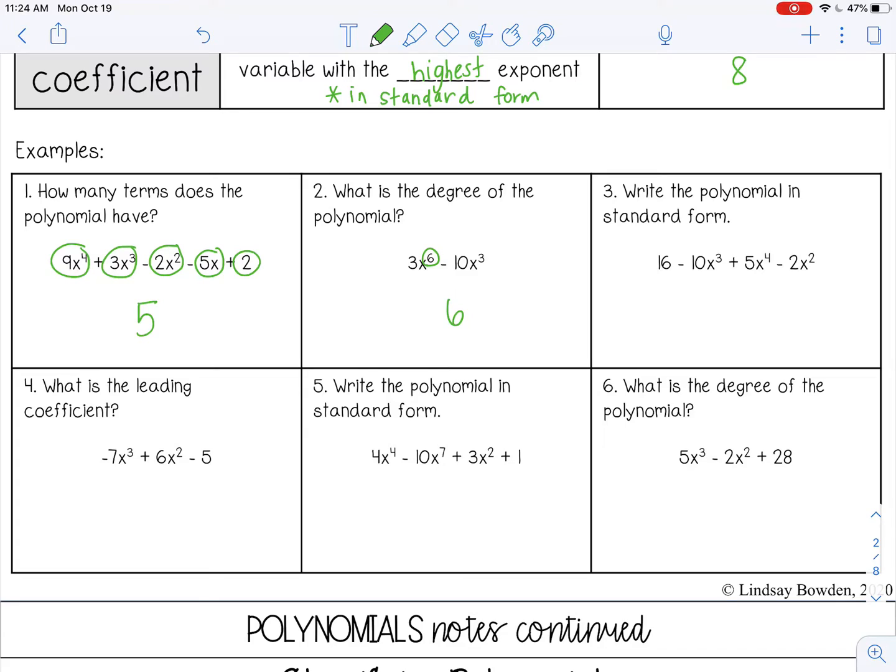So the highest exponent is 4, so 5x to the 4th power. I'm going to write that first. And minus 10x cubed minus 2x squared. Then we have a positive 16, so a plus 16.